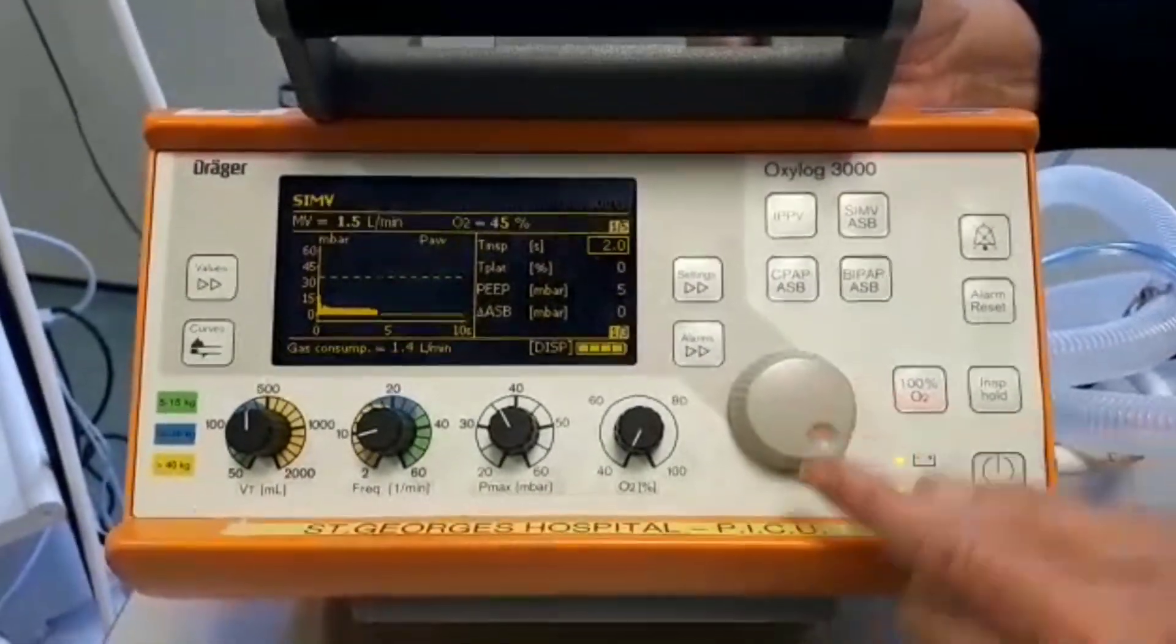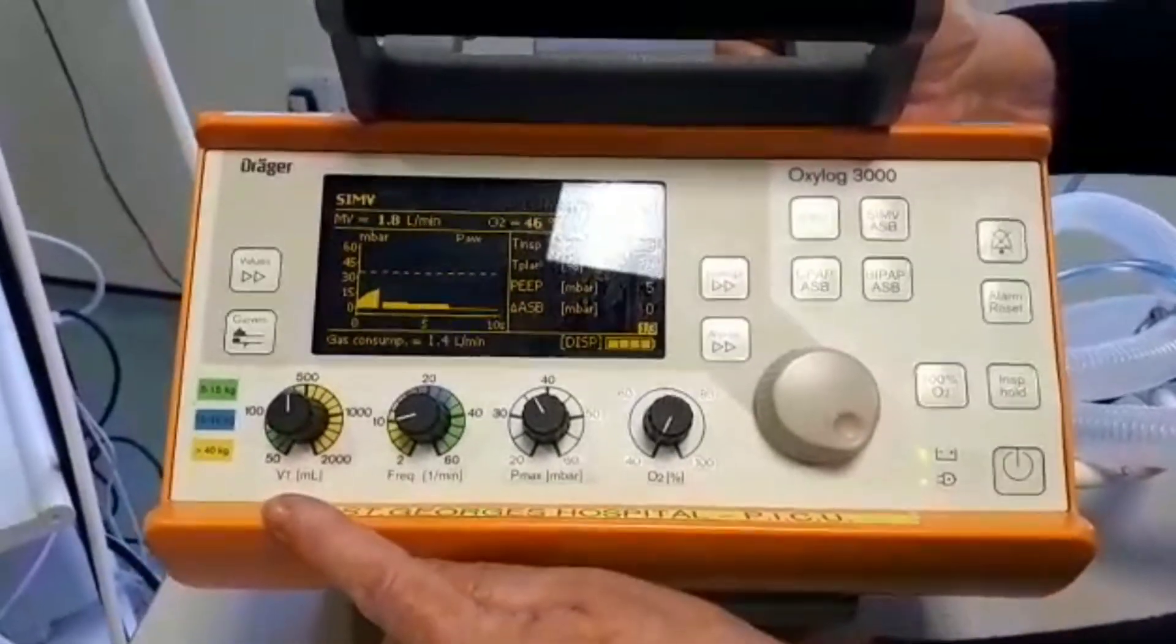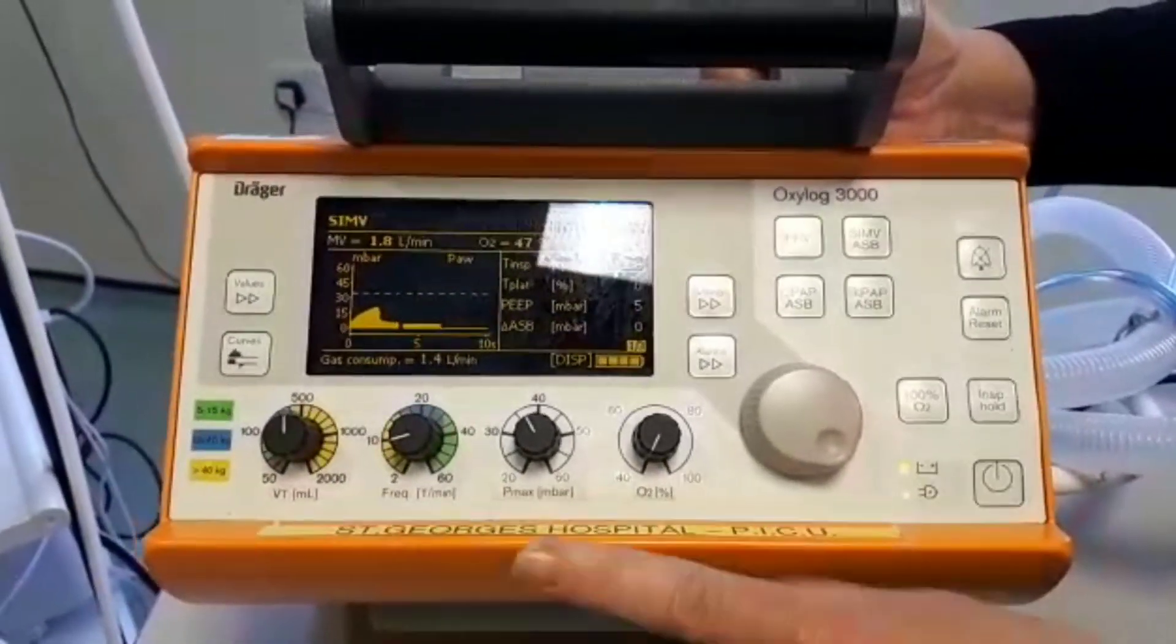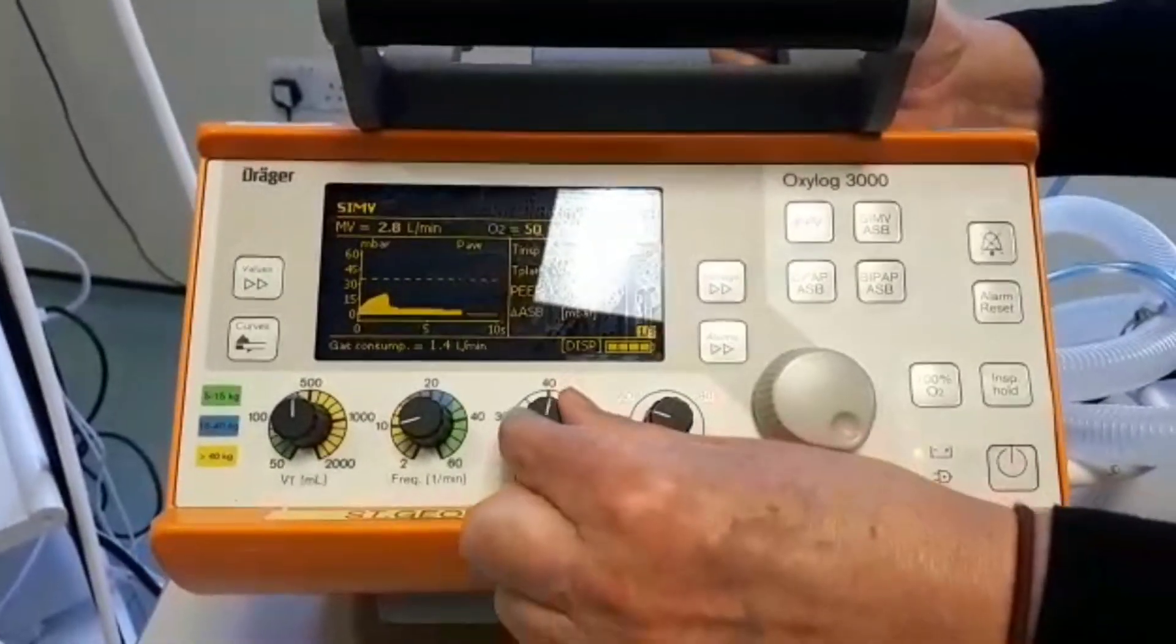To set any settings, we have four hard controls here. One for tidal volume, frequency, pressure, and oxygen. And you can adjust them just by turning the control.